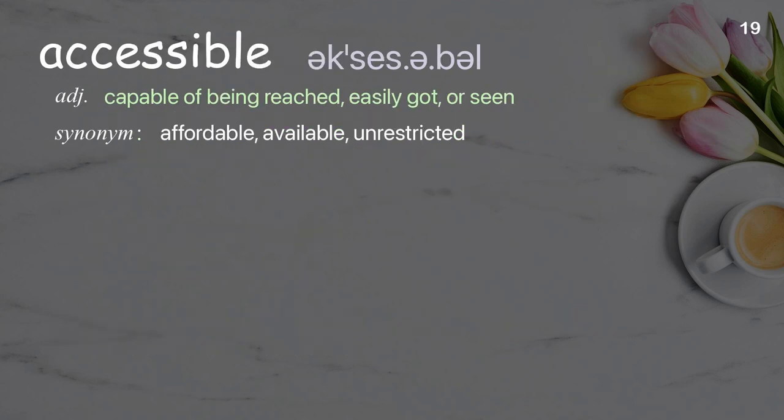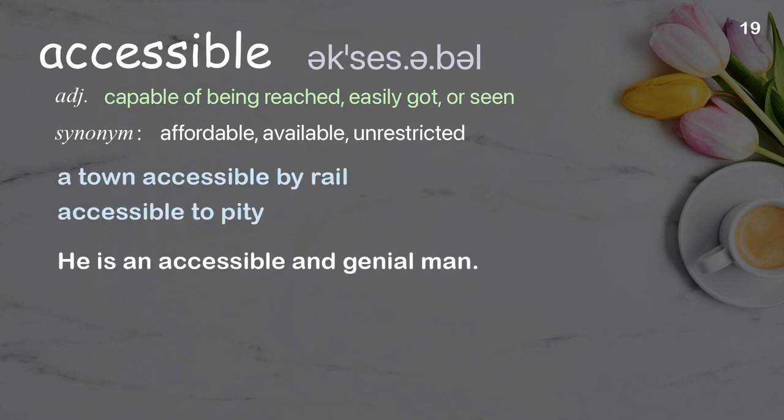Accessible: capable of being reached, easily got, or seen. Examples: a town accessible by rail, accessible to pity.